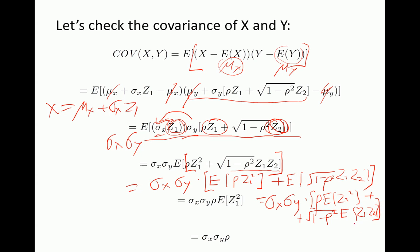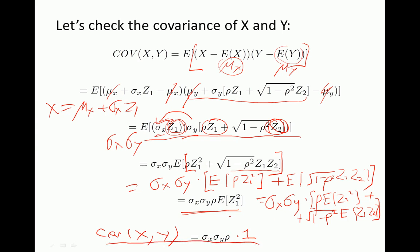Since z1 and z2 are independent with mean zero, the expectation of z1 times z2 equals zero. Therefore we're left with sigma x times sigma y times rho times the expectation of z1 squared. The expectation of z1 squared is just the variance of z1, which equals one since the mean is zero. Therefore the covariance of x and y equals sigma x times sigma y times rho. So if rho is not zero, x and y are correlated.